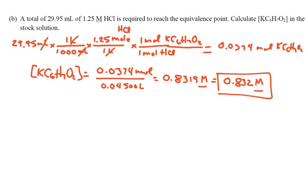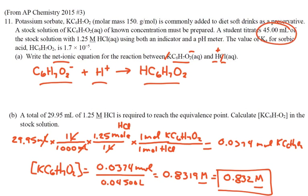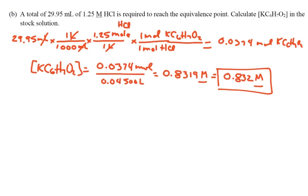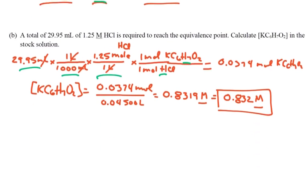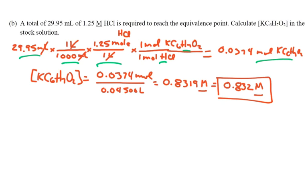Part B: A total of 29.95 milliliters of 1.25 molar HCl is required to reach the equivalence point. Calculate the potassium sorbate concentration in the stock solution. We're starting with a 45 milliliter sample of the stock solution. So we take 29.95 milliliters of our solution, change it to liters, use the molarity of the HCl. Now we have moles of HCl. We can tell that since there's one H that goes onto the sorbate, it's a one-to-one ratio, and that gives us the moles of potassium sorbate.